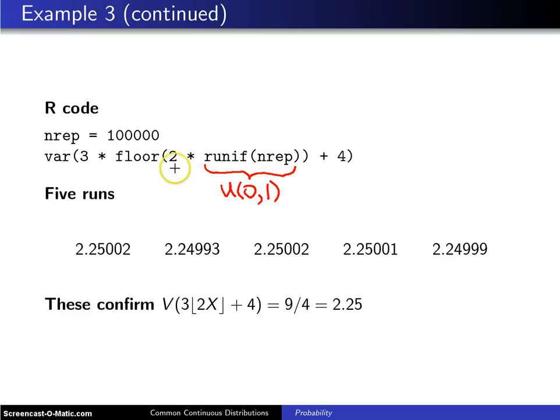Now what happens to those uniform 0 ones is they get multiplied by 2, and then the R floor function is applied. Those get multiplied by 3, 4 gets added, and this var operator here will give you the variance of those 100,000 values.